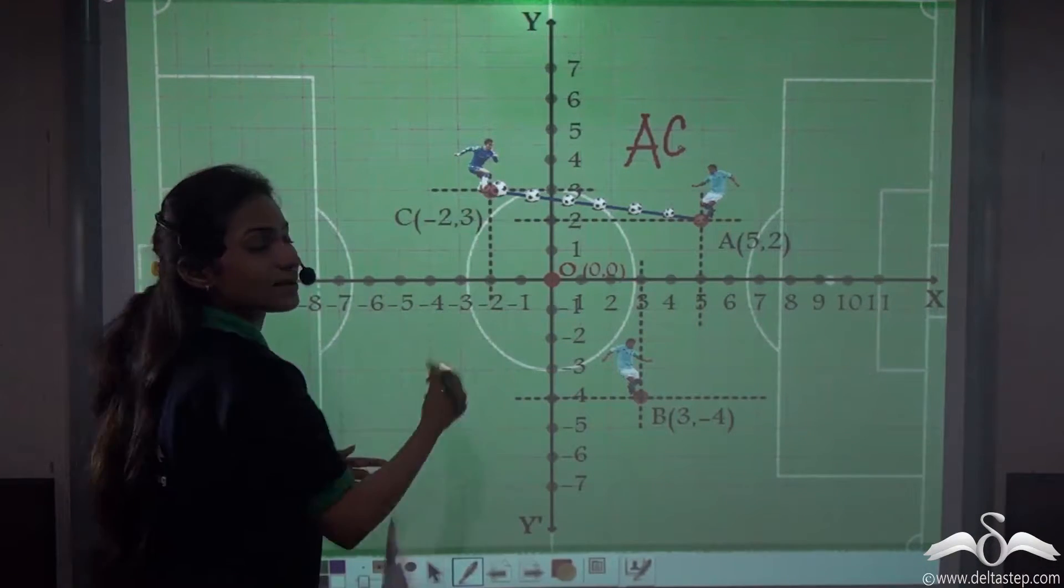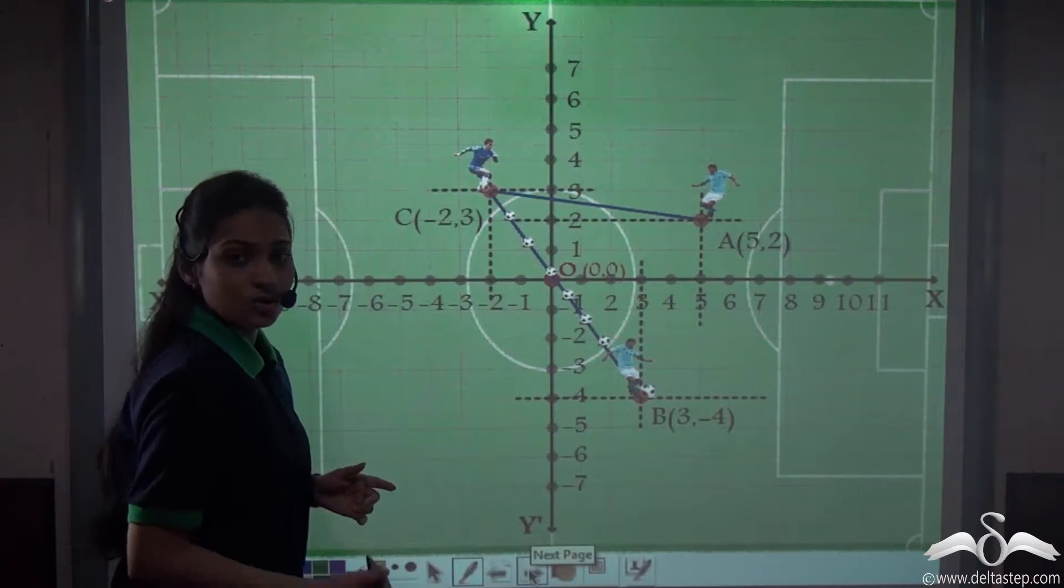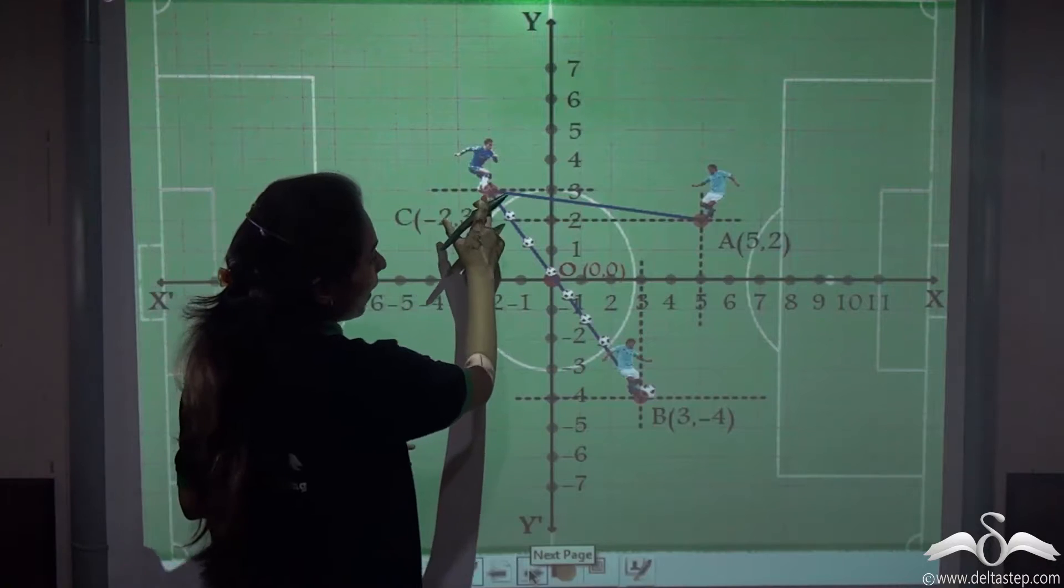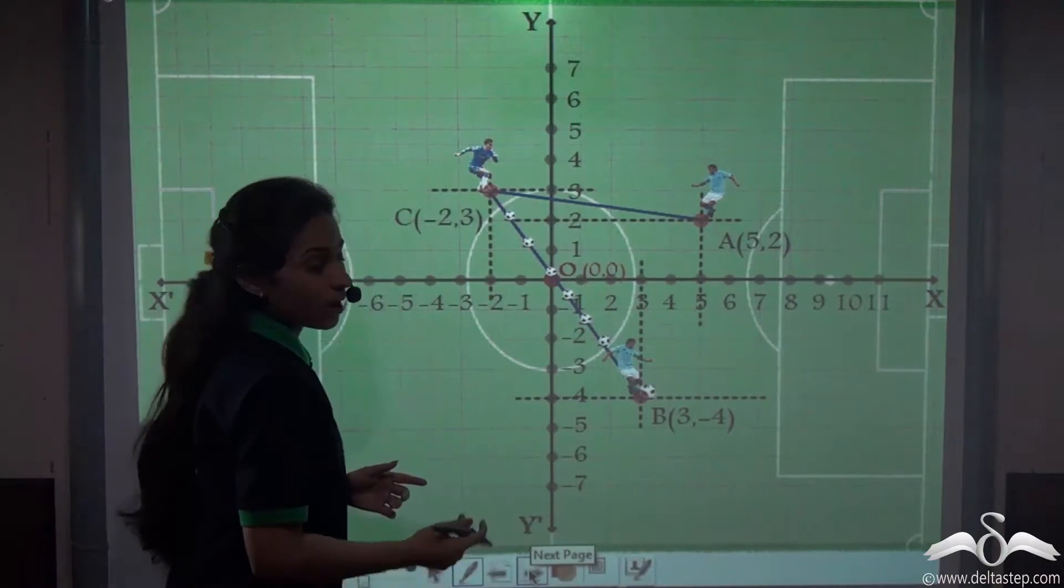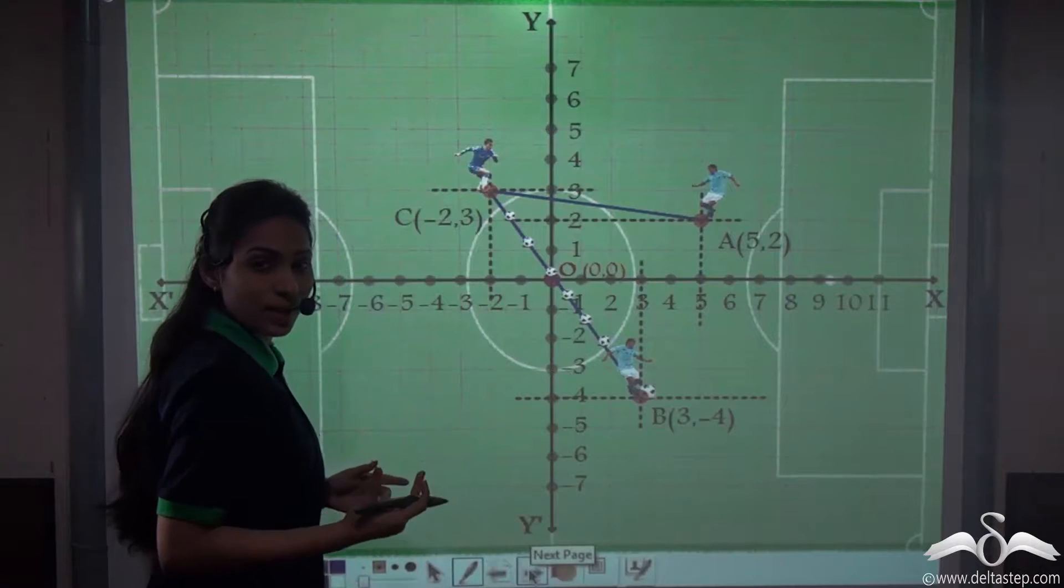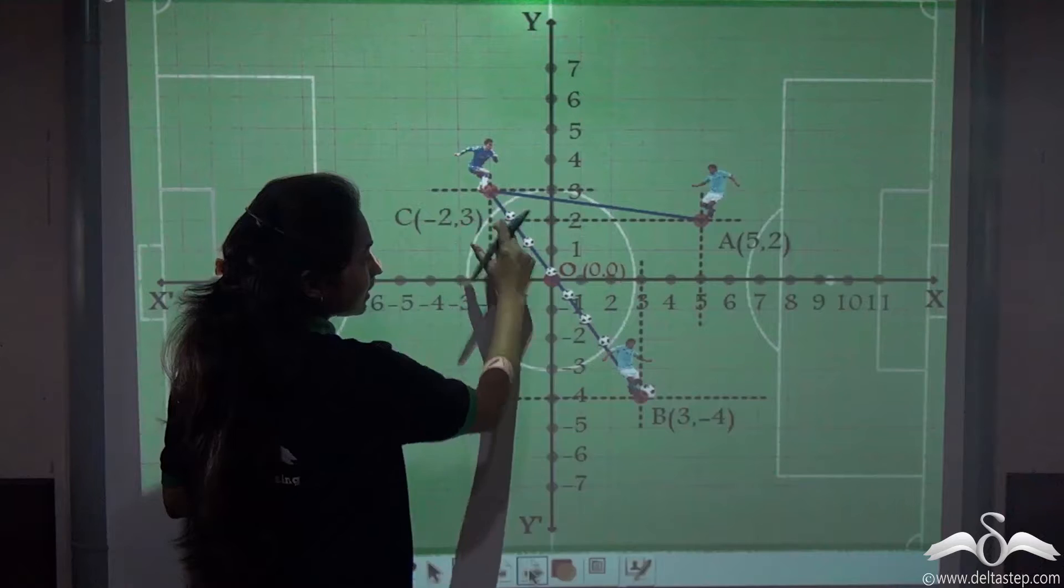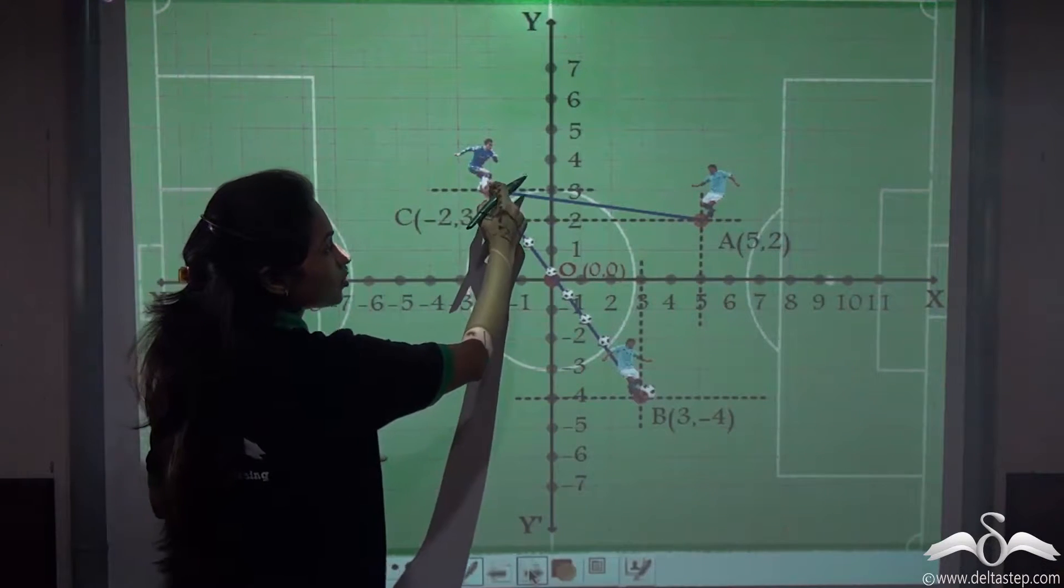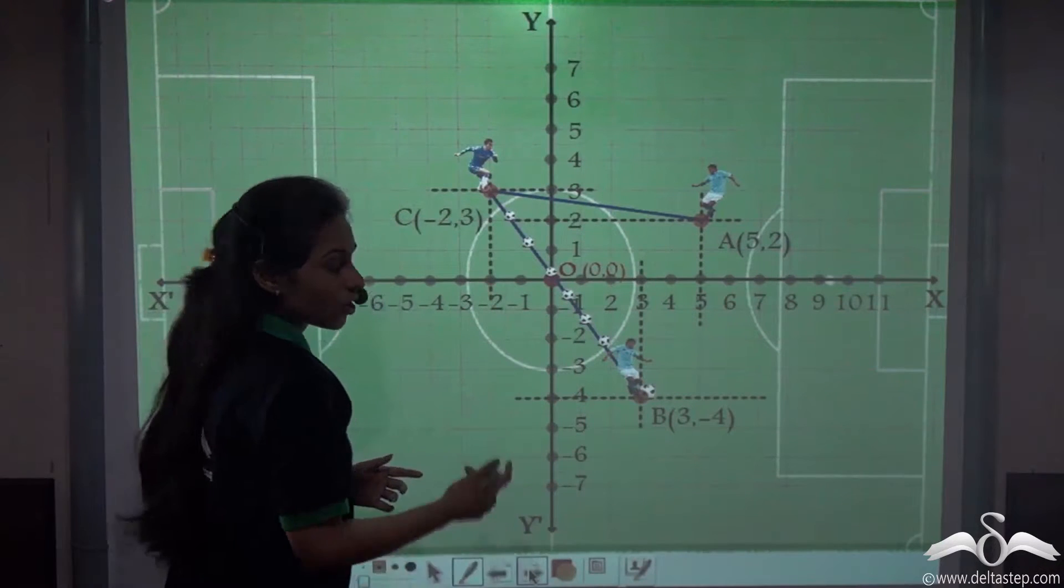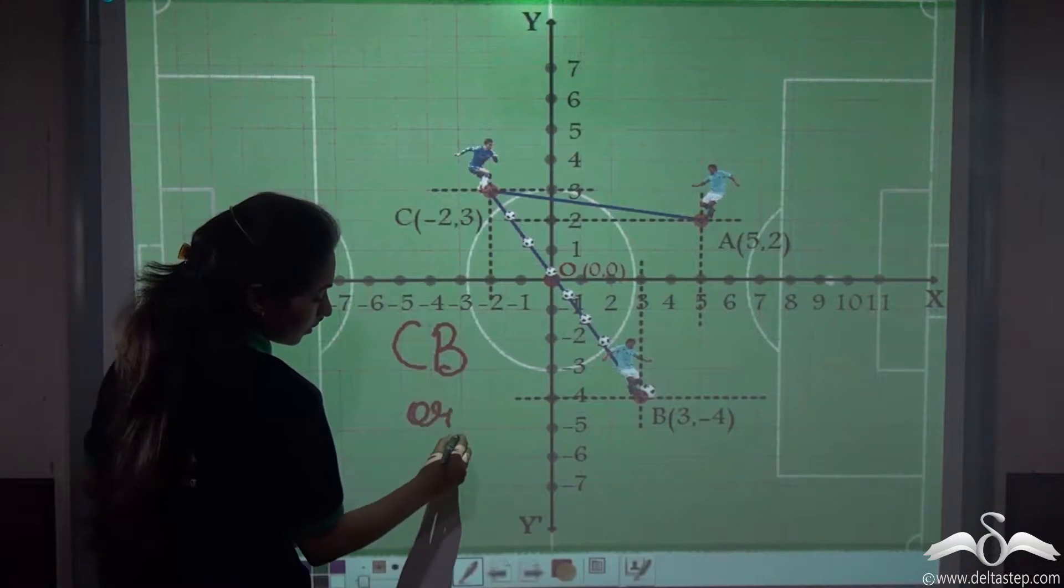Now player C passes the ball to player B. Again you can see that the path can be traced and this path is a line segment. What will you name it? You can name it as CB or BC because this line segment is joining the points C and B.